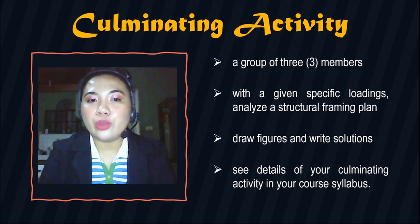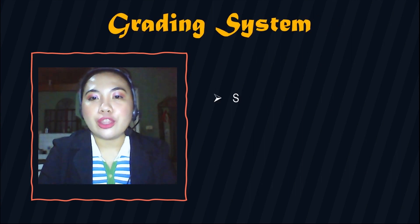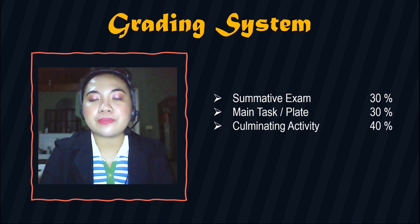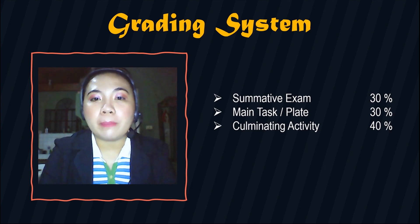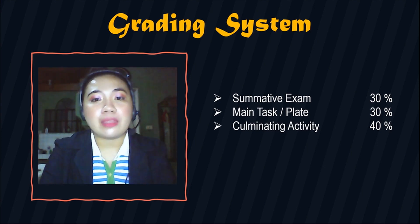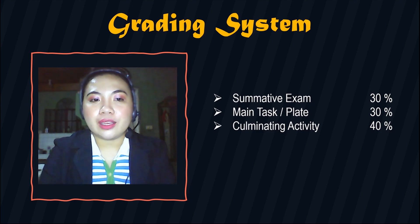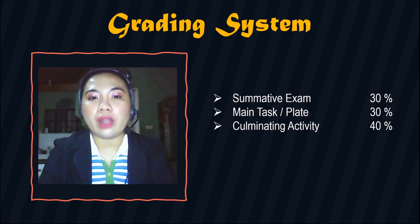Now let us see how you are going to be rated. 30% will come from your summative exams — midterm and finals. Another 30% will come from your main task, or plates. The biggest part, 40%, will be your culminating activity. Please be guided accordingly. That ends our virtual tour for our course, Absonistas. Your tour guides are looking forward to seeing you hurdle these challenges and rise up undefeated. Good luck!